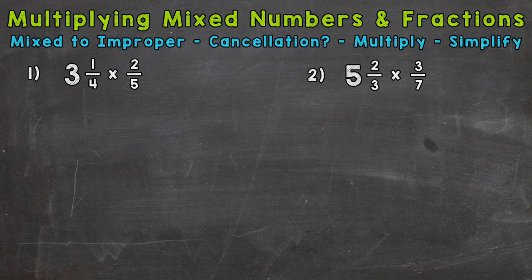So let's jump right into number one where we have three and one-fourth times two-fifths. The steps that we're going to take to solve these problems are at the top of the screen. We want to change any mixed numbers to improper fractions first. That way we have a top and a bottom, a numerator and denominator, and then we can multiply straight across.